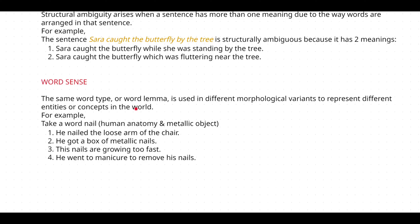To get a clear understanding, consider the example word 'nail.' Nail has two different meanings. One is the nails on your fingers, which comes under human anatomy. The other is a metallic object — a nail that you beat into walls using a hammer.